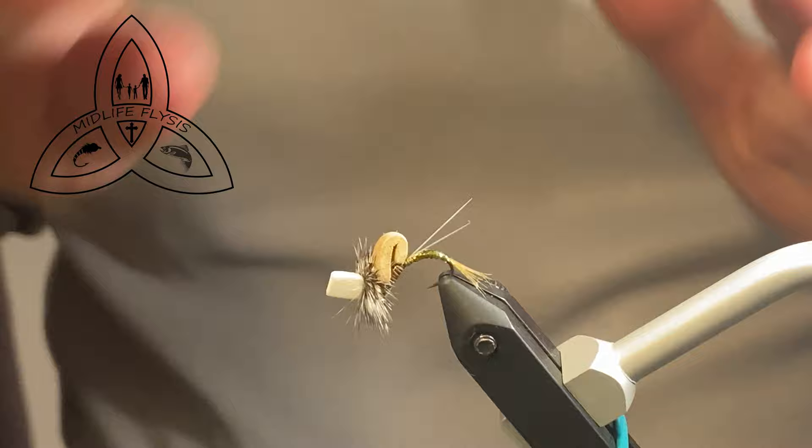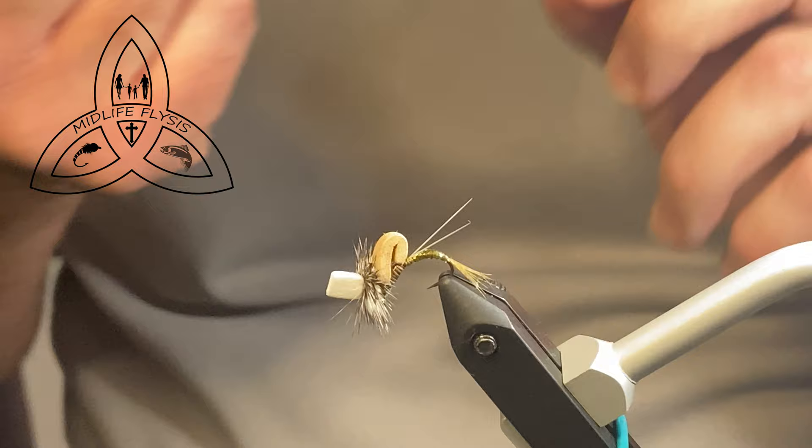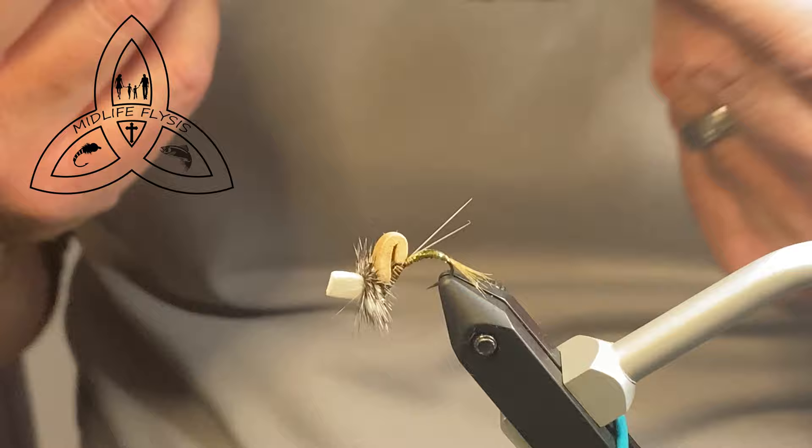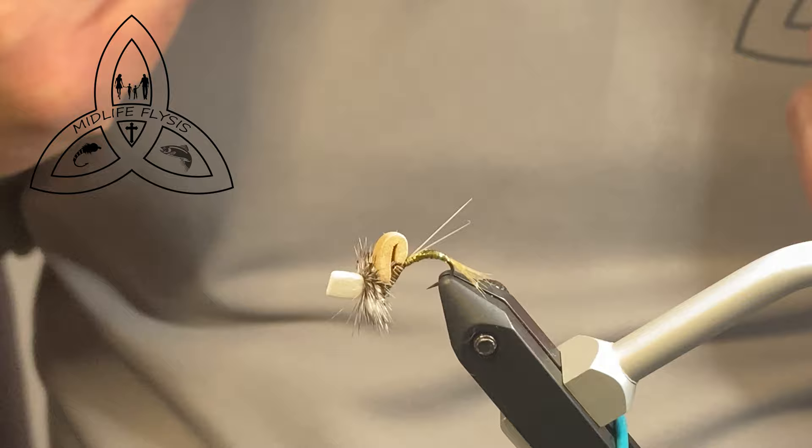So this is my Portly Emerger. The reason I developed it was I needed an emerger small fly that could stay afloat in rougher water. Parachute adams, things like that, a klinkhammer, I don't find that they stay afloat well enough because they rely only on the hackle. This has some foam built into it, which gives it the extra flotation that the fly needs, yet making it appear like a vulnerable emerging insect near the surface.